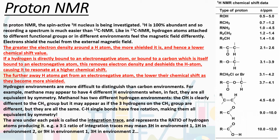The area under each peak is called the integration trace, and this represents the ratio of hydrogen atoms that produce it. The key word here is ratio — it doesn't mean the actual number. So a three-to-one ratio could mean three hydrogens in one environment and one in another, or nine and three, and so on. The integration trace gives the ratio of hydrogen atoms, not necessarily the actual number. The theory is essentially the same as carbon-13 NMR, just now we're dealing with hydrogen atoms.